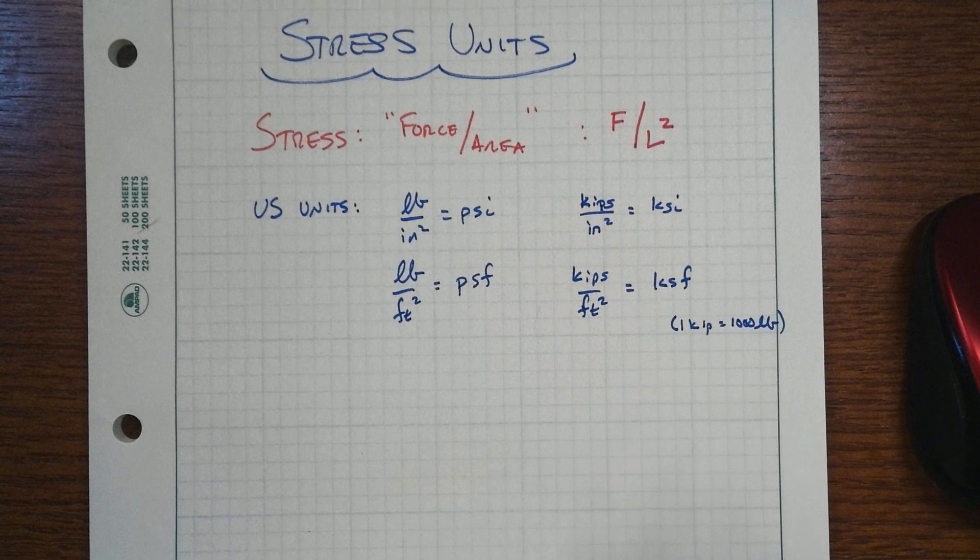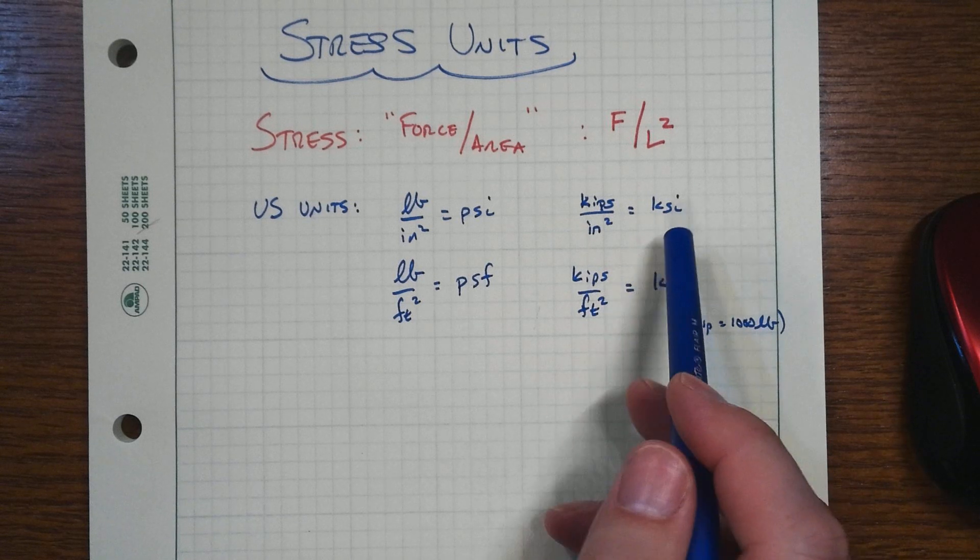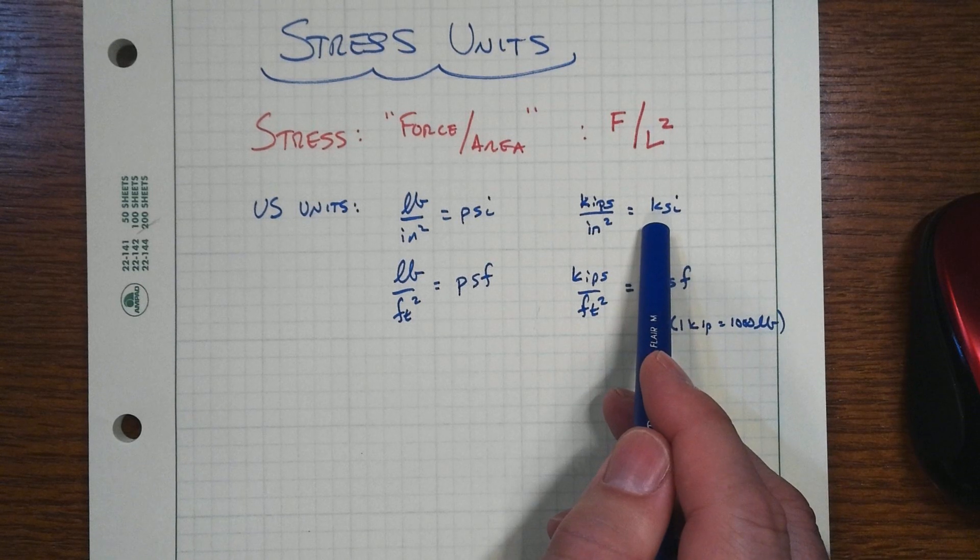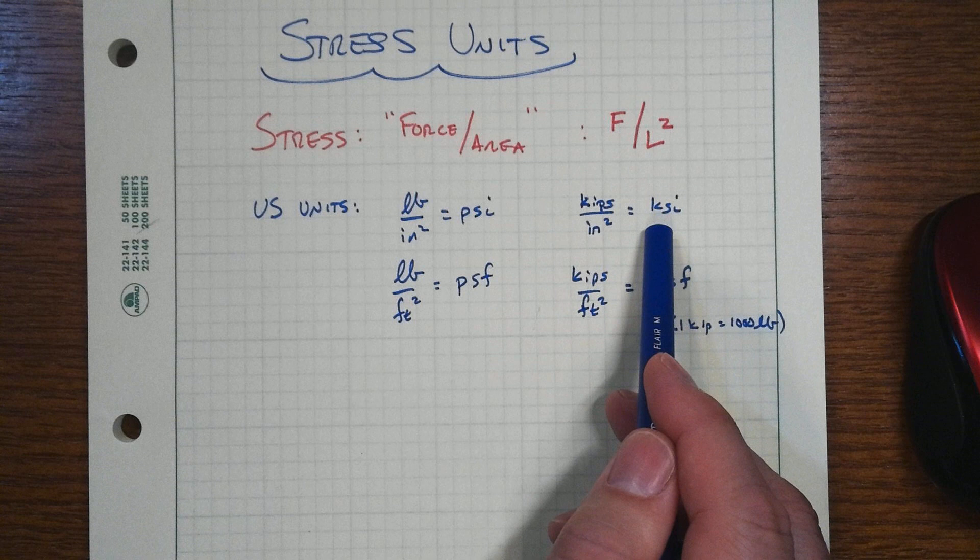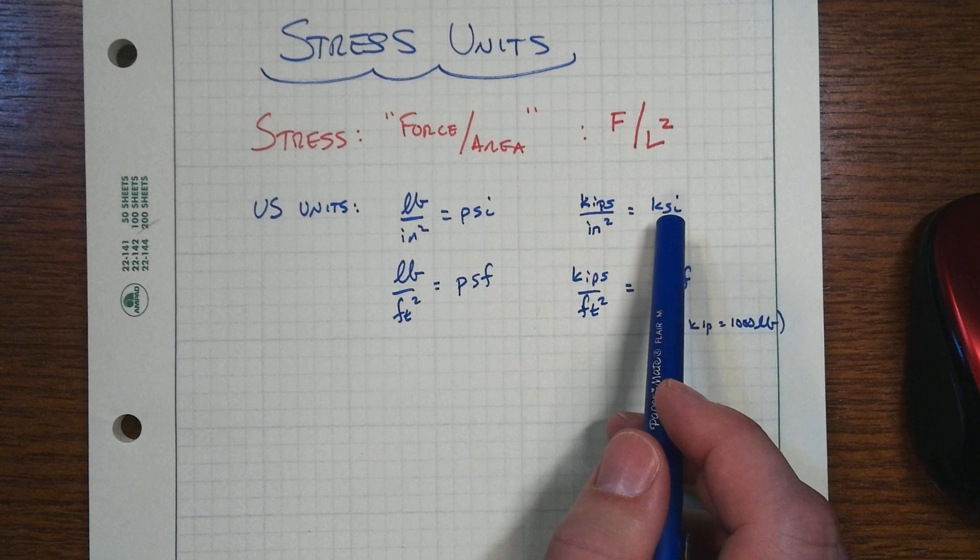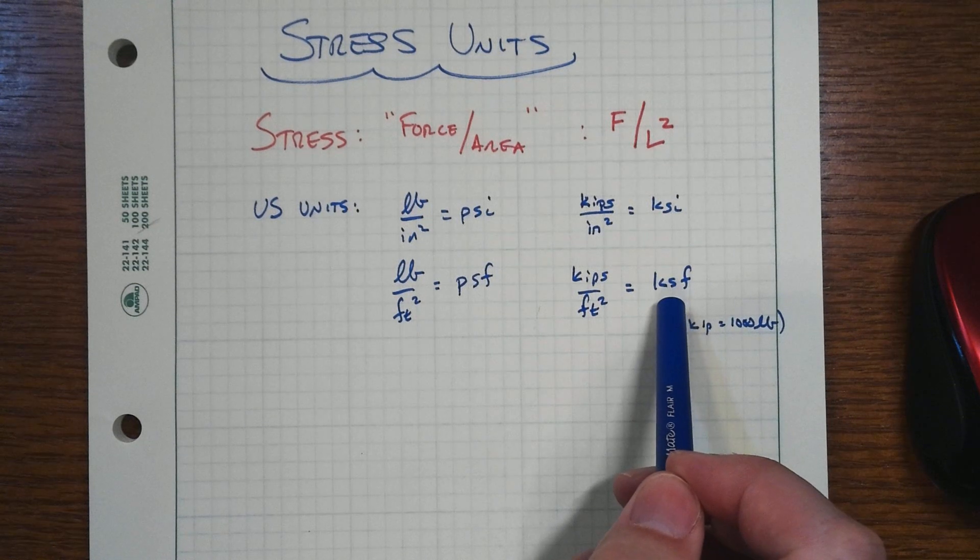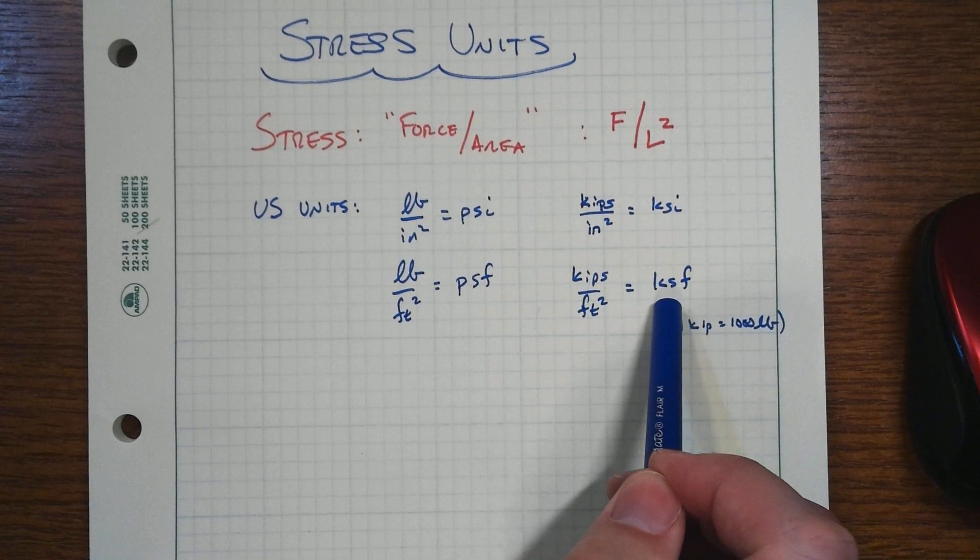And remember that one kip is equal to 1,000 pounds. So for the U.S. units, those are pretty common. Where you see these numbers commonly are going to be, you'll be in KSI units when you're talking about most steels.